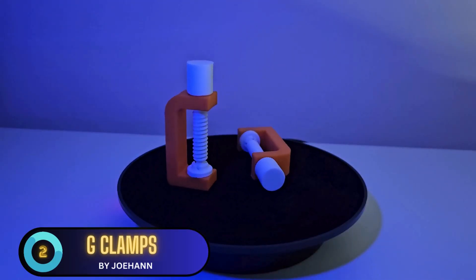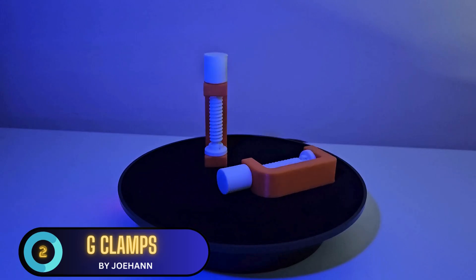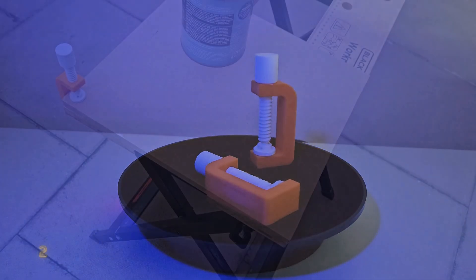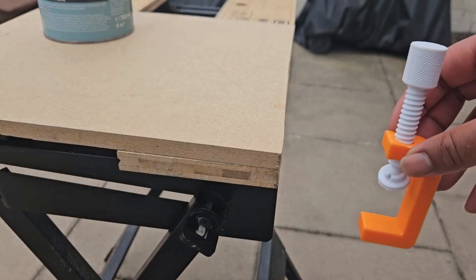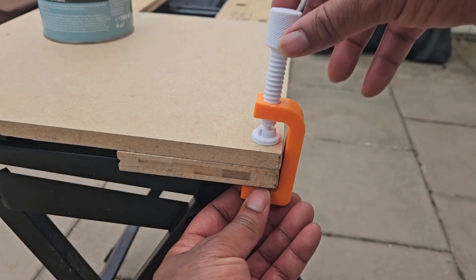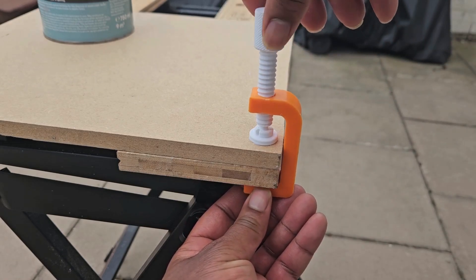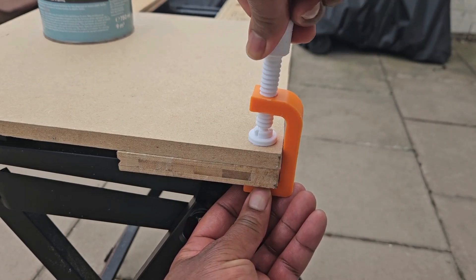At number 2, we have the useful and handy G-Clamps. These mini but strong gripping equipment help you to hold in place material to cut or join together, stopping your pieces from moving and avoiding any mistakes.